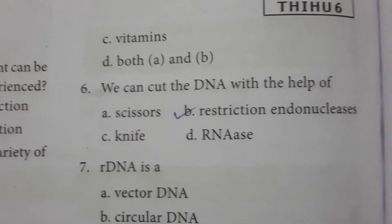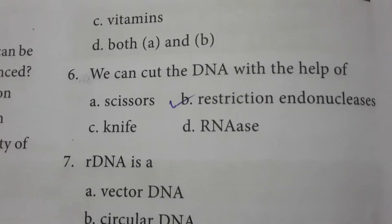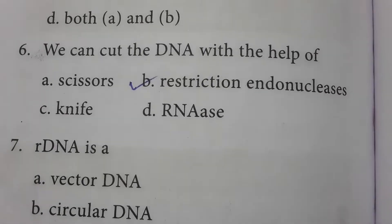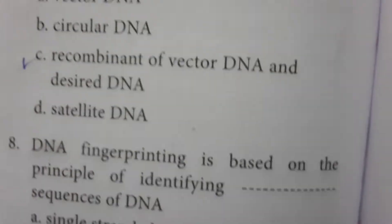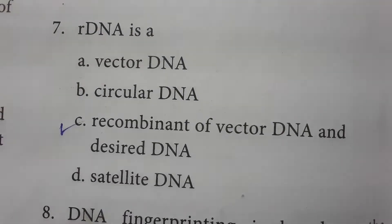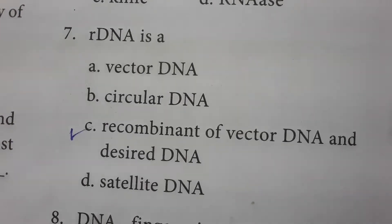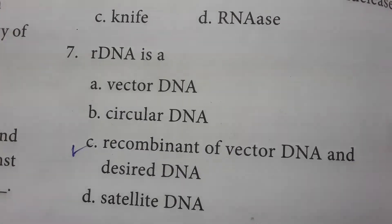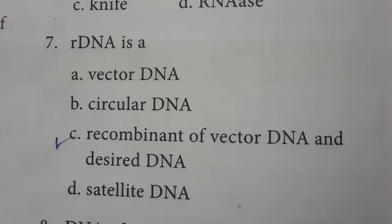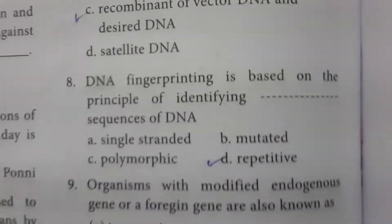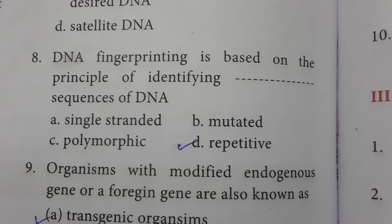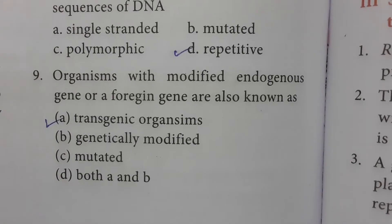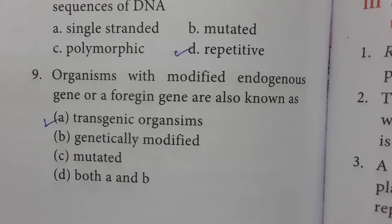We can cut the DNA with the help of restriction endonucleases — these act like scissors or a knife that cuts. The cut DNA is then mixed to form recombinant DNA. DNA fingerprinting is based on the principle of identifying repetitive sequences of DNA. Organisms with a modified or foreign gene are also known as transgenic organisms.